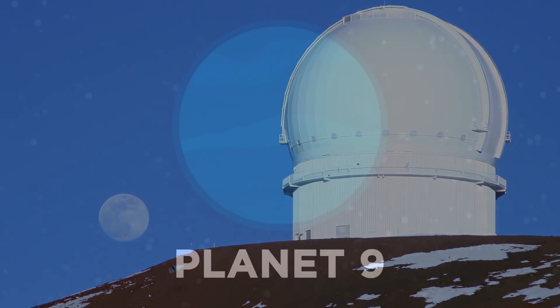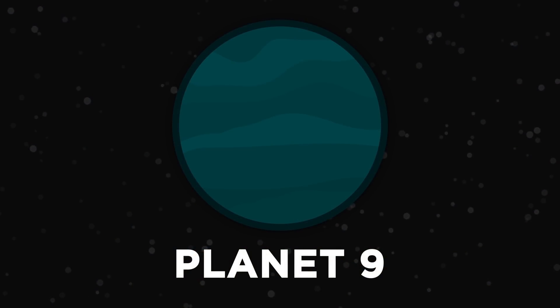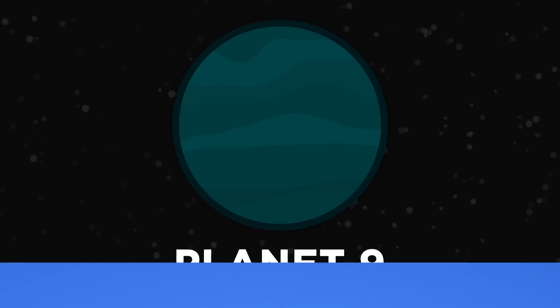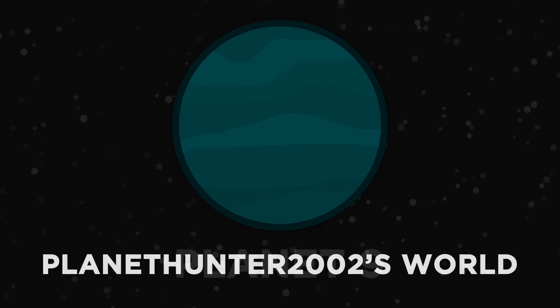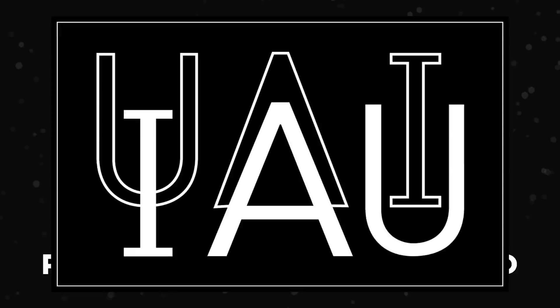Planet 9 does not currently have an official name, and it won't receive one until it's been confirmed through optical imaging. Once that's been done, the person or team responsible for the discovery will be given priority in naming the planet, which needs to be confirmed by the International Astronomical Union.